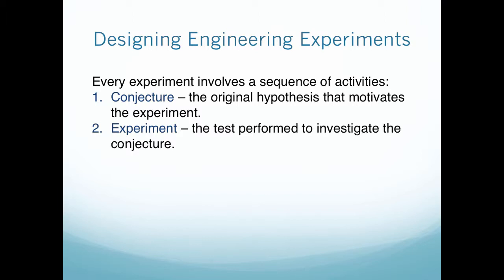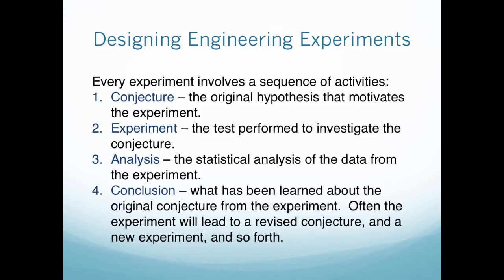The test performed to investigate the conjecture. So this can be tricky to design, and there's a lot of factors that go into it. After the experiment is done and performed and the data is compiled, we have the analysis, the statistical analysis of the data from the experiment itself. And lastly, we have our conclusion, which is what has been learned about the original conjecture from the experiment.